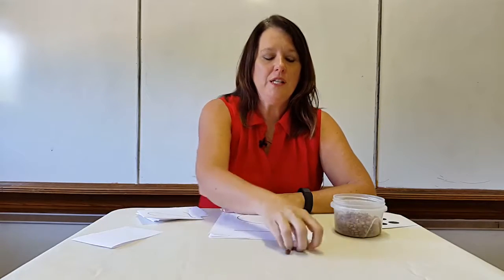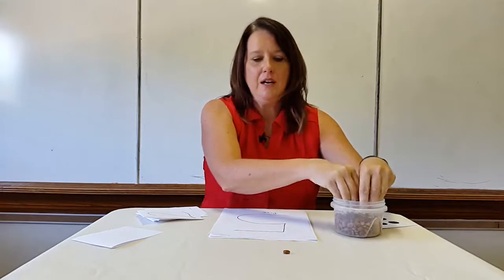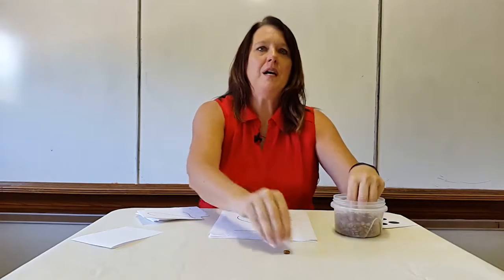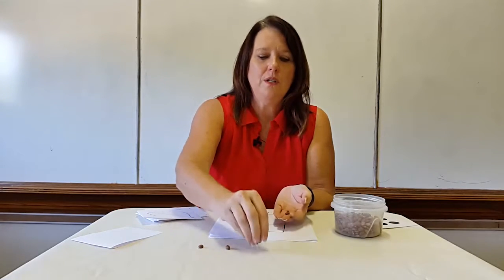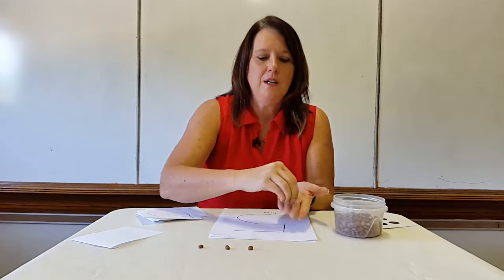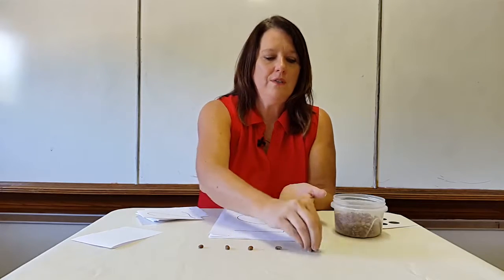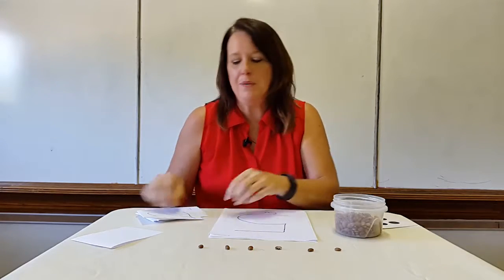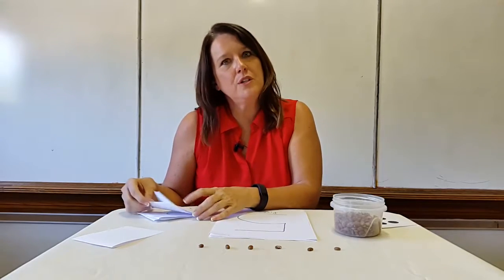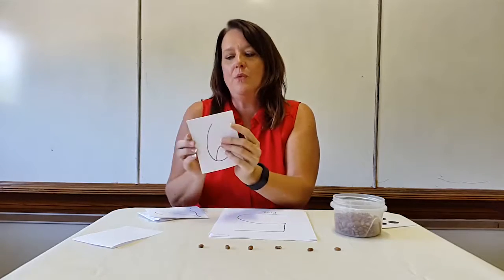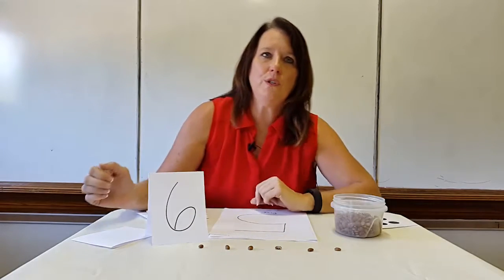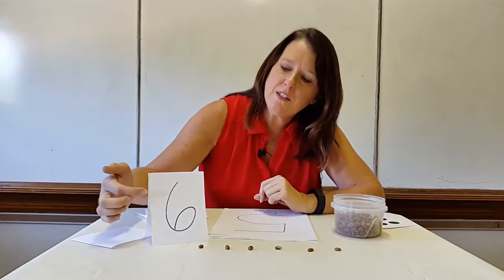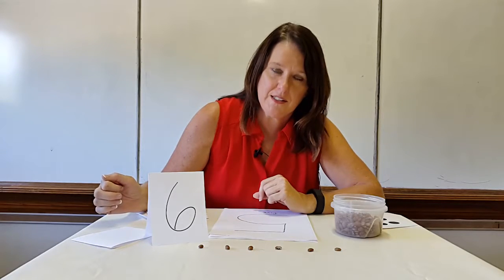Then we would continue to count. I might say, boys and girls, let's count to six: one, two, three, four, five, six. How many beans are there, boys and girls? Six. And when you have six beans, this is the number you use. This is the way we write six.